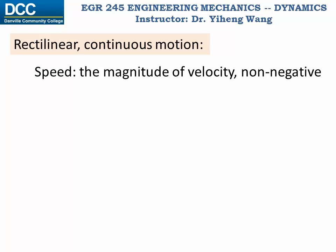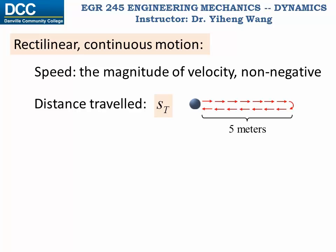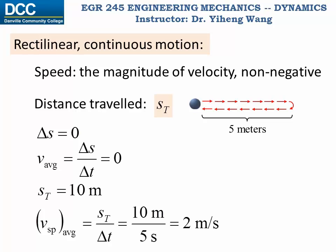Another scalar quantity we sometimes use is distance traveled, st. It is the length of the actual path traveled, and it is not the same as displacement. For example, if this ball travels five meters to the right and returns to its original position, all in five seconds. Since there is no change in the position of the ball, its displacement is zero, therefore its average velocity is also zero. However, its distance traveled is a total of ten meters, and therefore its average speed is ten meters over five seconds, which is two meters per second.